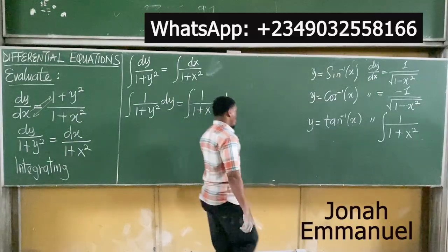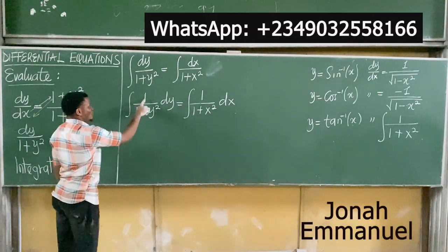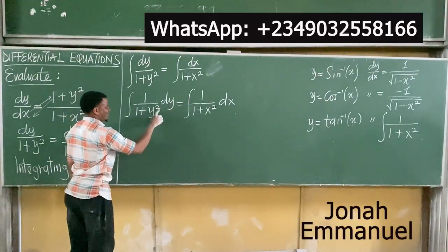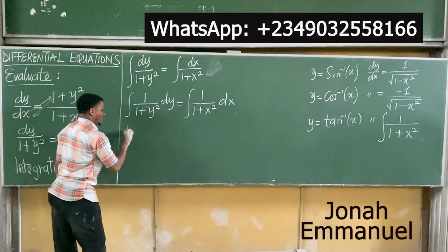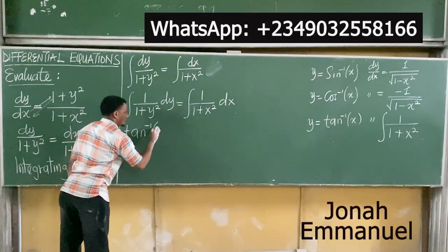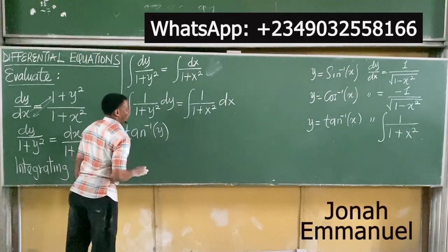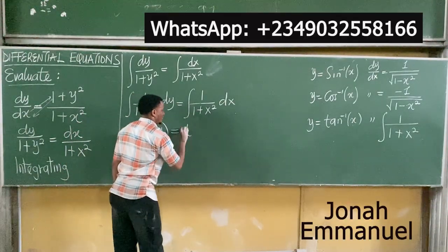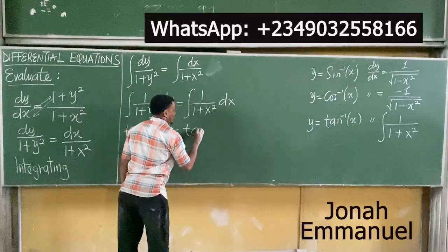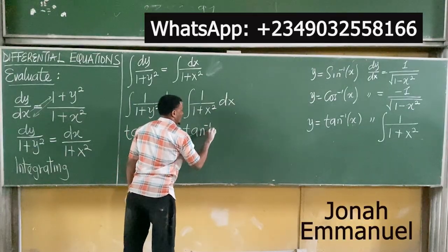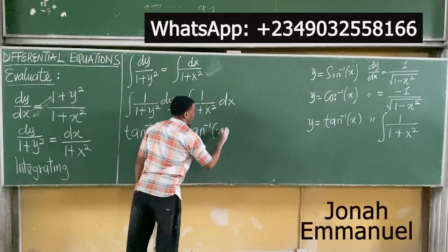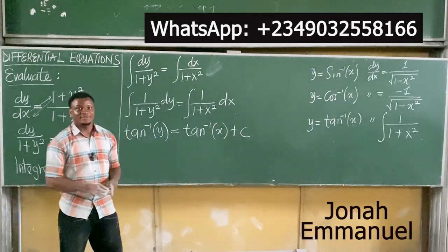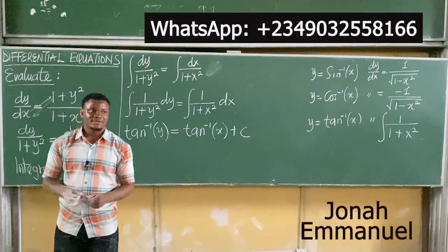In essence, if I integrate 1 all over 1 plus x squared, I'll get tan inverse of x. So if I integrate 1 all over 1 plus y squared, that gives tan inverse of y, which is equal to tan inverse of x plus c.